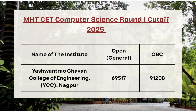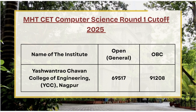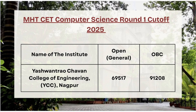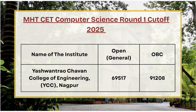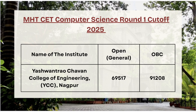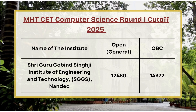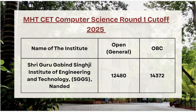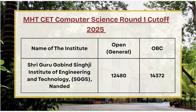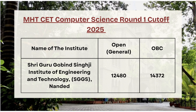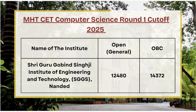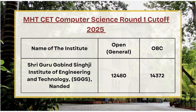Next we have YCC Nagpur. For open category the cutoff rank is 69,570, and for OBC category the cutoff rank is 91,208. Next we have SGGS Nanded — for open category the cutoff rank is 12,480, and for OBC category the cutoff rank is 14,372.